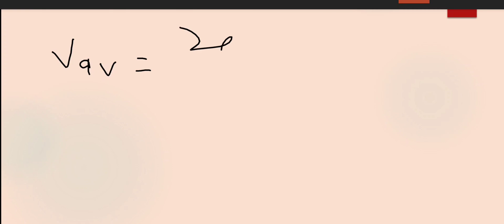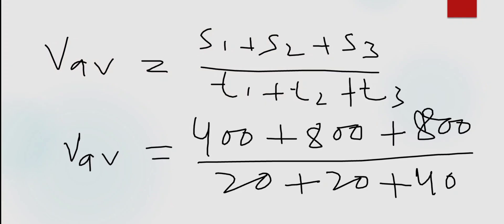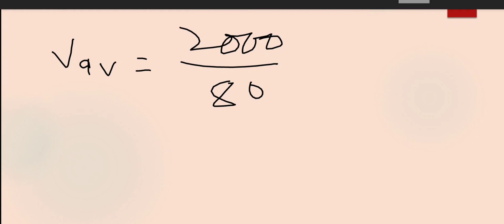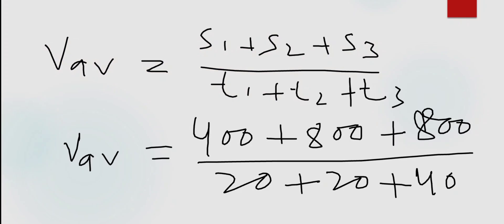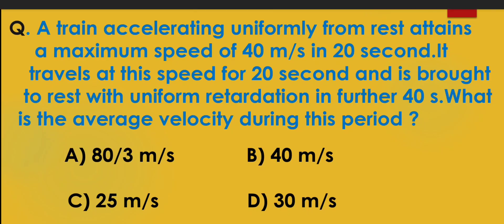So average velocity will be equal to, जब हम इनको add करेंगे तो यह 2000 हो जाएंगे, 2000. और time को जब हम add करेंगे तो यह 80 हो जाएंगे. means 800, 800, और 1600, plus 400 तो 2000. और यह 40 plus 40, 80. So जब हम इनको divide करवाएंगे तो हमें final answer मिलेगा 25 meter per second. So the correct option will be C, 25 meter per second.